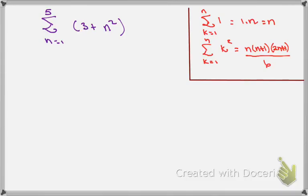Okay, so the problem I ask you to do is summation n equals 1 to 5 of 3 plus n squared. So I'm going to use my first property for sums, which is going to allow me to break that up.